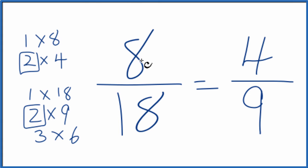We should note that 8 divided by 18 and 4 divided by 9 give you the same decimal number. These are equivalent fractions. We've just simplified or reduced 8 over 18 down to 4 over 9.